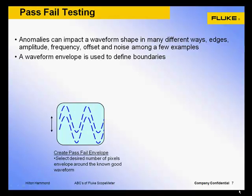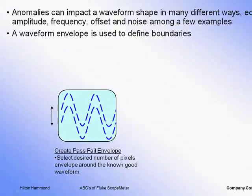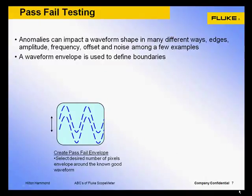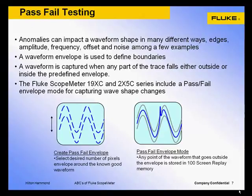Pass-fail testing uses a known waveform as a reference to create an envelope. With the reference envelope, the Fluke 190 series or 220 series scope meter can be set up to capture the waveform in the event any sample point falls outside or within the predefined reference envelope. All pass or fail waveforms are stored in 100-screen replay memories, giving a 100-screen buffer of either pass or fail events. Setting up pass-fail is fairly straightforward: first capture the known good waveform, then create the reference envelope by shifting the waveform by the desired number of pixels to create a tolerance level. Save this waveform to memory, then recall the screen as a reference waveform. Use the waveform options reference menus to activate pass-fail testing. The options are store on pass or store on fail. Sit back and watch the scope store failures to the replay memories.